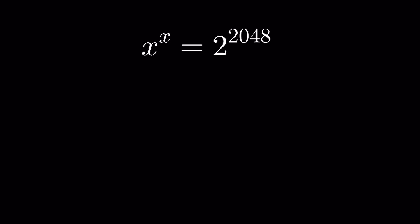x to the power x is equal to 2 to the power 2048. We have to find the value of x. To find the value of x, we can use the rule that if a to the power a is equal to b to the power b, then a is equal to b.